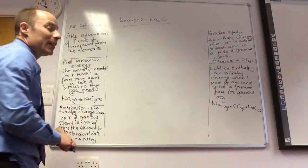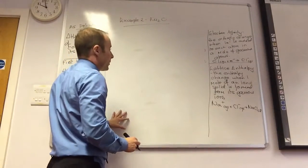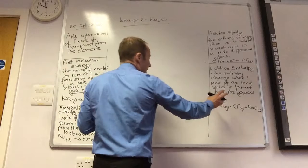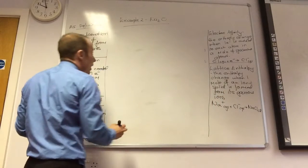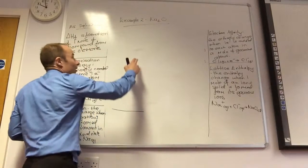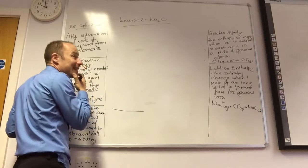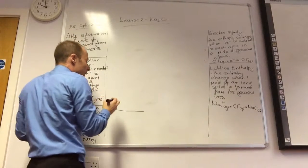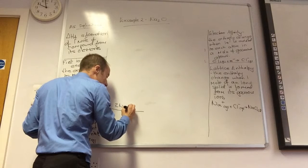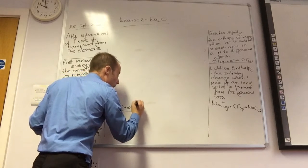We'll do another example now. You're going to need yourself a bit more space because we're going to have more steps on this. But we need to remember our key definitions. I'm going to start off down here with Na₂O. So what are my elements I need to start with? I need to start off with 2 Na solid plus O₂ gas.